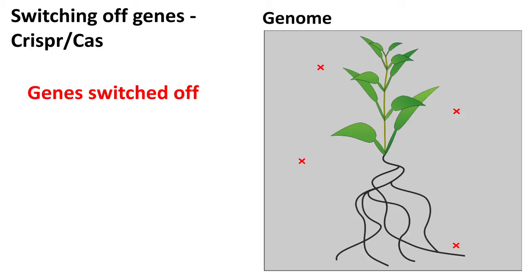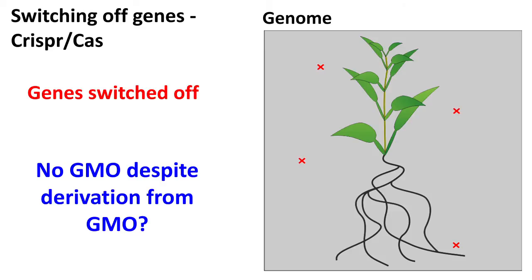This constitutes a relatively complicated borderline case. The plants produced are not different from normal plants, since genes can be switched off by conventional means as well. With the current definition, these plants are not genetically modified, although they are derived from genetically modified precursor plants.